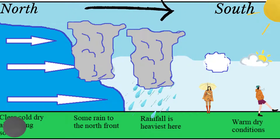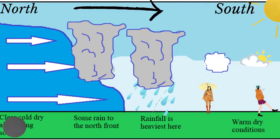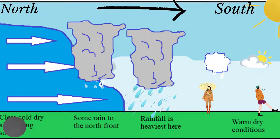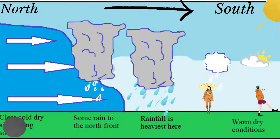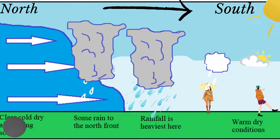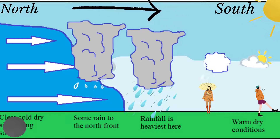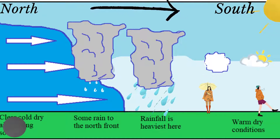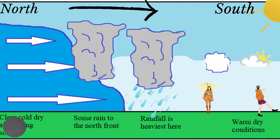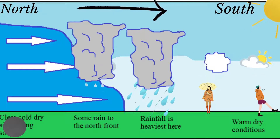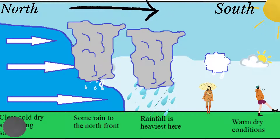This diagram summarizes the changes in weather conditions as the cold front passes. South of the cold front — that is, before it arrives — there is a light wind blowing from the east, and there are also bright, sunny conditions.